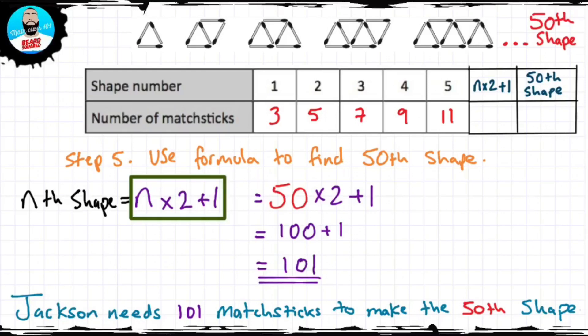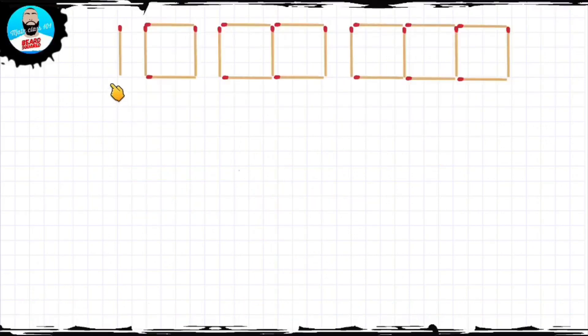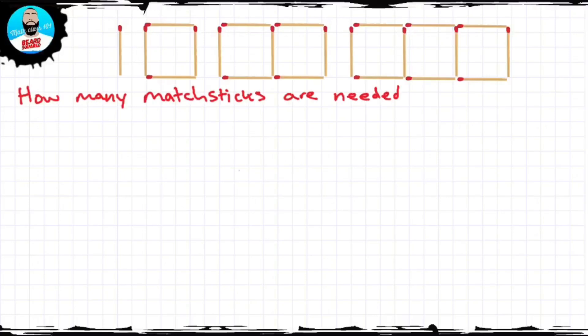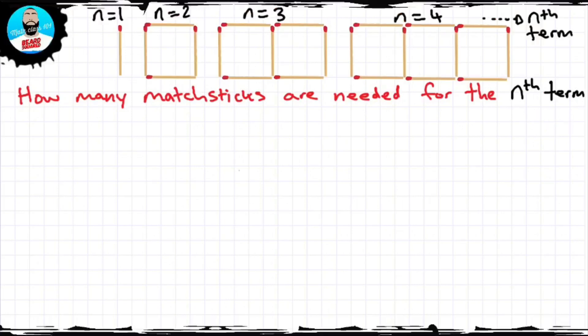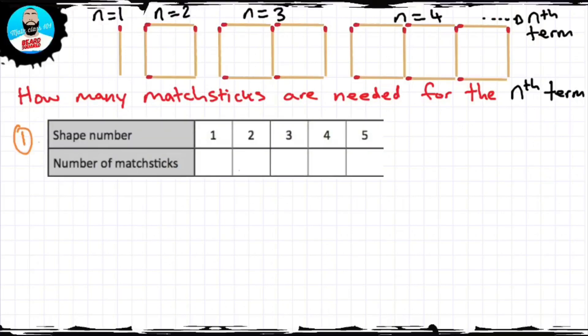Let's do another question. Jackson's sister Sarah wants to find out how many matchsticks she's going to need for any number of shapes — for the 50th shape or the 100th shape — so she wants to find out how many matchsticks are needed for the nth term. Step 1: again, we start off with making a table of values.